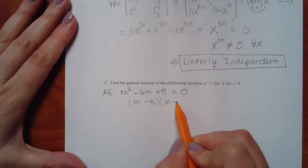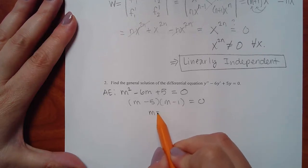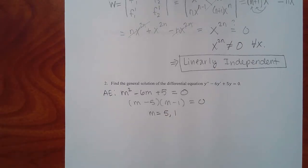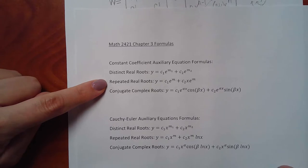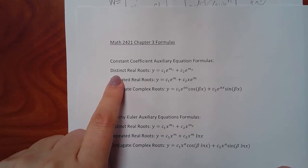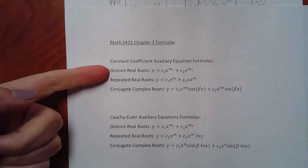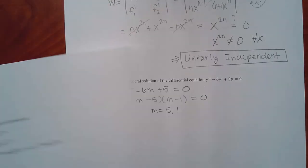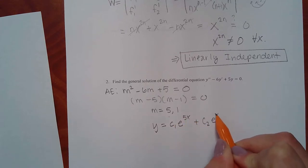Factors are negative five and negative one — that gives negative six and positive five, correct. Setting each factor to zero gives m equal to 5 and m equal to 1. This is the case of two distinct real roots — different real numbers. So the answer is y equals c1·e to the 5x plus c2·e to the x.